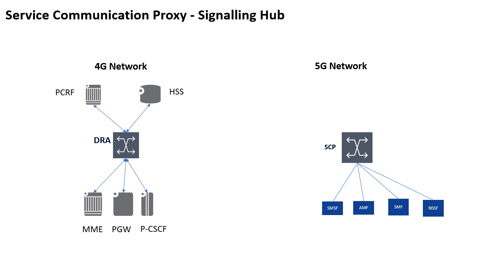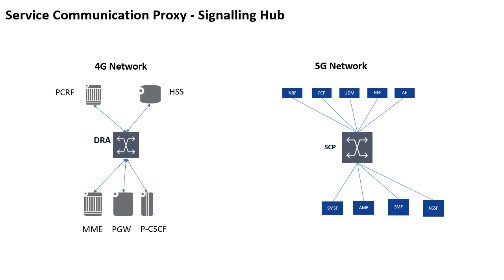For example, we have network functions called AMF, SMF, and SMSF. Whenever these network functions need to talk to other network functions — for example PCF or UDM — such as AMF wanting to talk to PCF for user policy, or AMF wanting to talk to UDM for context management or getting subscription data — that type of signaling communication between different network functions uses the consumer and producer model. If a consumer wants to talk to a producer, that signaling routing will be via SCP. So SCP is nothing but the HTTP/2 signaling routing agent.